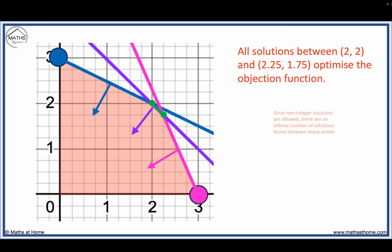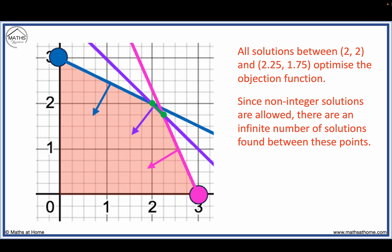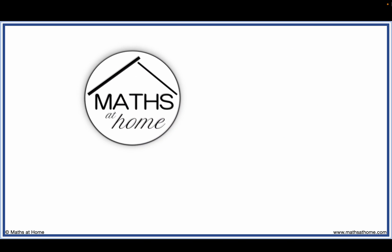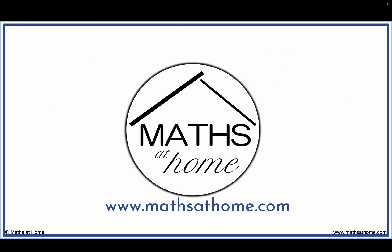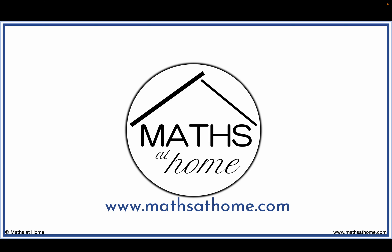Since non-integer solutions are allowed, there are an infinite number of solutions found between these points. Essentially any decimal value of the coordinates along the green line segment are optimal solutions. Visit maths-at-home.com for further videos and practice.